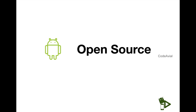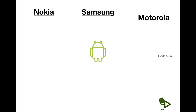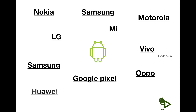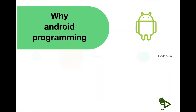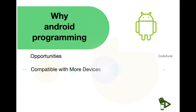Android is open source and is used by many smartphone companies like Samsung, OnePlus, Nokia, Oppo, Vivo, LG, Huawei, and more. Because it is open source, there are many options available. Android is user-friendly with the best camera, best performance, and many different kinds of Android phones available.